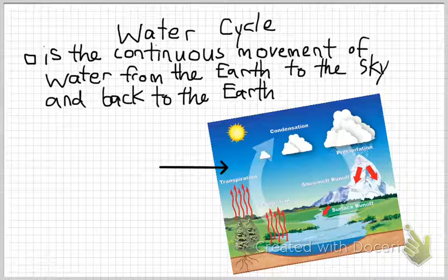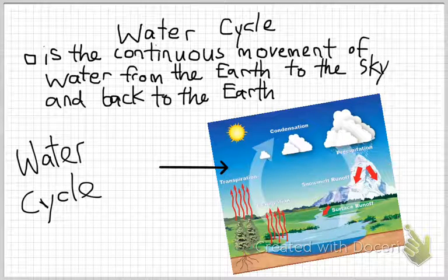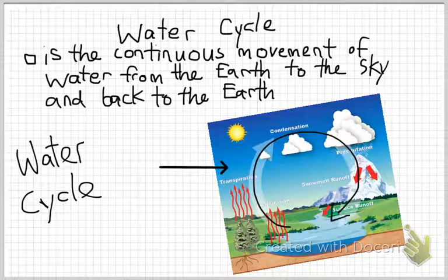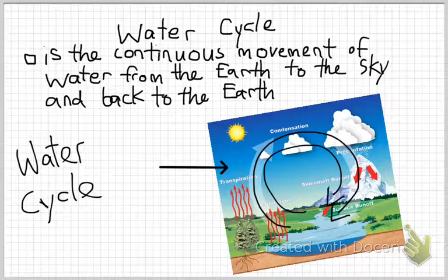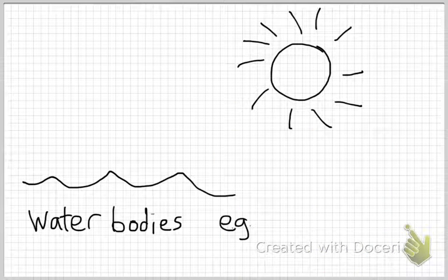Now, water cycle — when we think about water cycle the first thing that comes to mind is that it is the continuous movement of water from the earth to the sky and back to the earth. As you can see in this diagram, this diagram shows the water cycle. Water cycle goes on and on — will water cycle ever stop? No, it's forever. That's right, water cycle never stops. There is no start and no end, it just keeps going on and on.